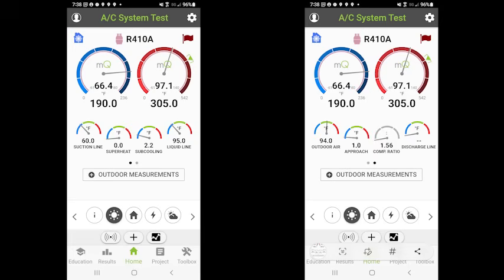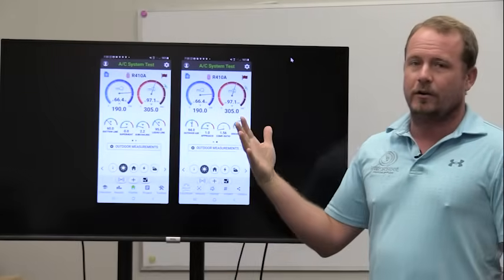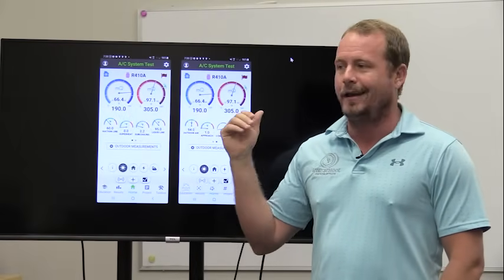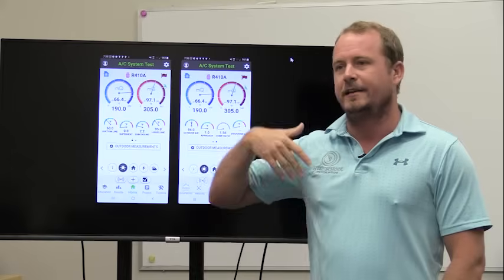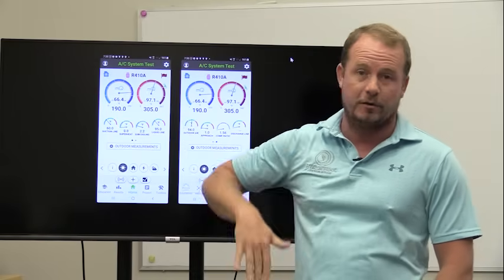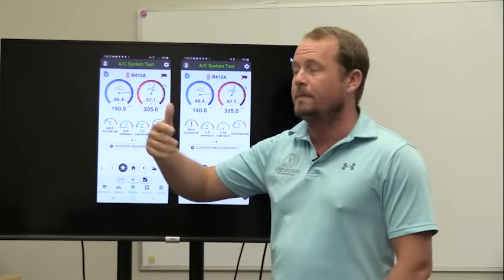What are some of the other indications? Well, an easy way to think about this that kind of summarizes all of this is compression ratio. So here we show a compression ratio of 1.56, which is definitely low. Typical modern equipment, you're generally going to see compression ratios around 2.3. And that can vary a little bit. Obviously, you get a much hotter summer day, compression ratio is going to go up. You have somebody who wants to keep it really cold inside their house, compression ratio is going to go up.